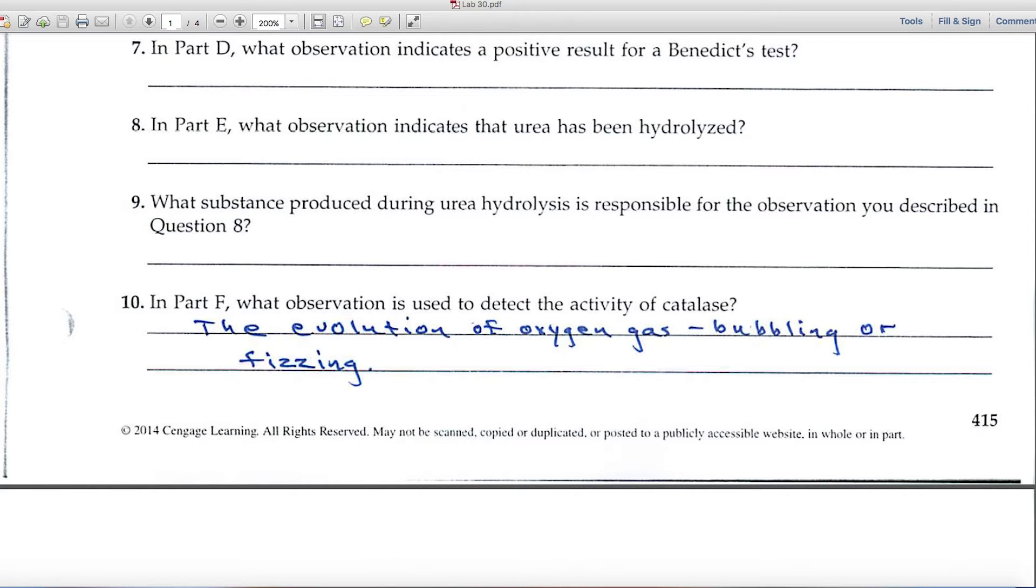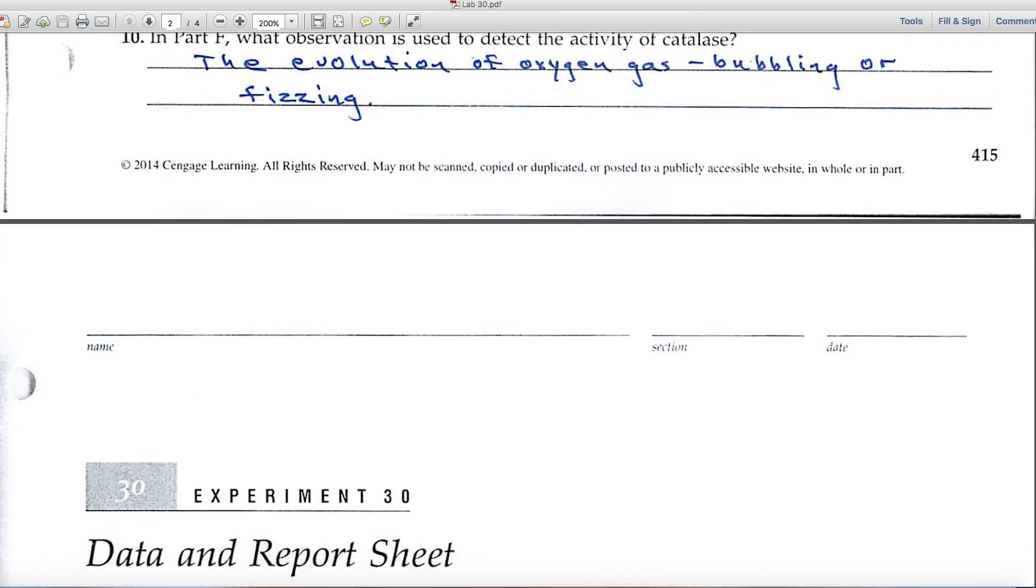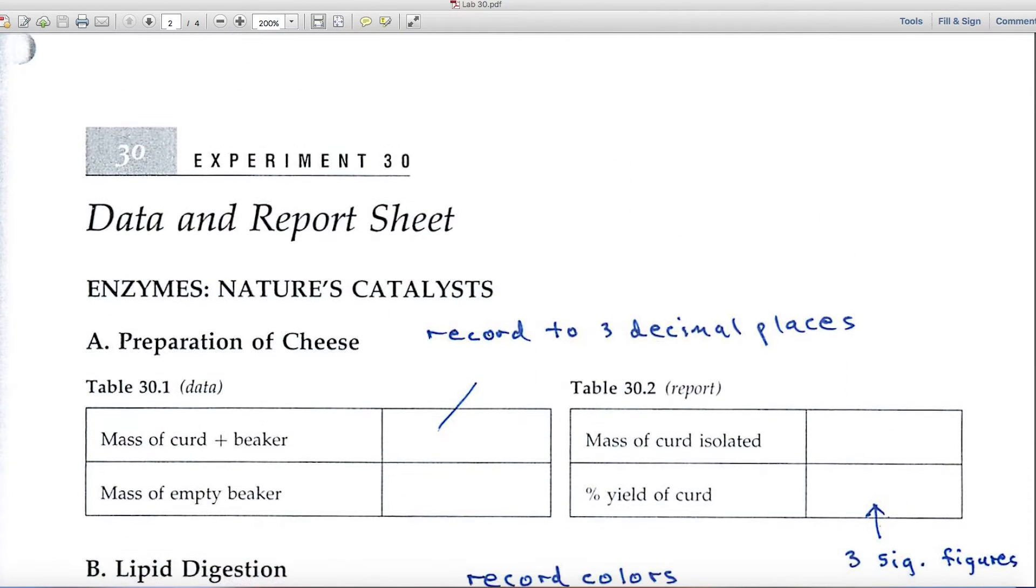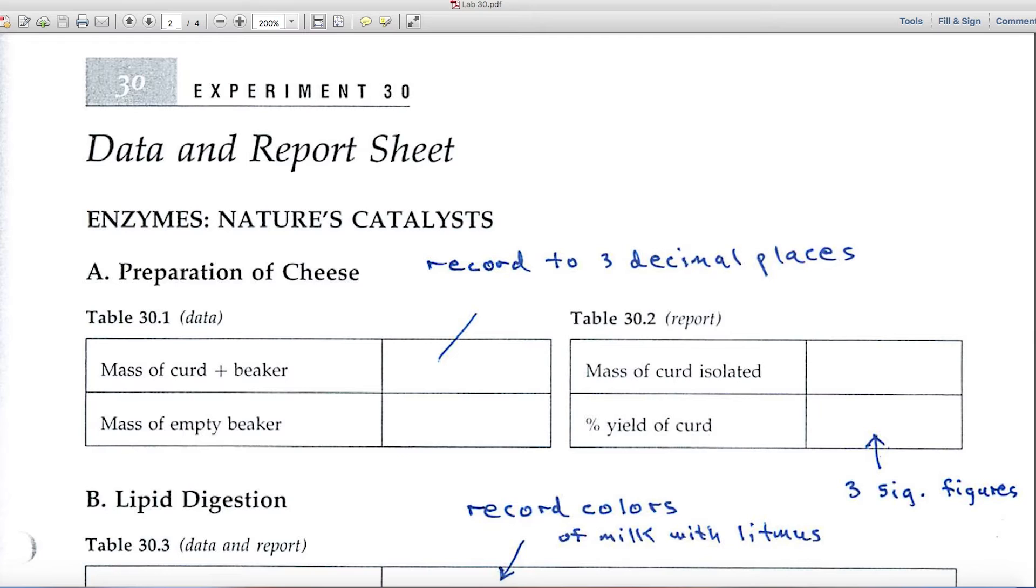In the photos, here we are, we're ready for the data and report sheets. Part A deals with the preparation of cheese, and you're weighing beakers and cheese curd. You can record the three decimal places; you can get that information from the photos.